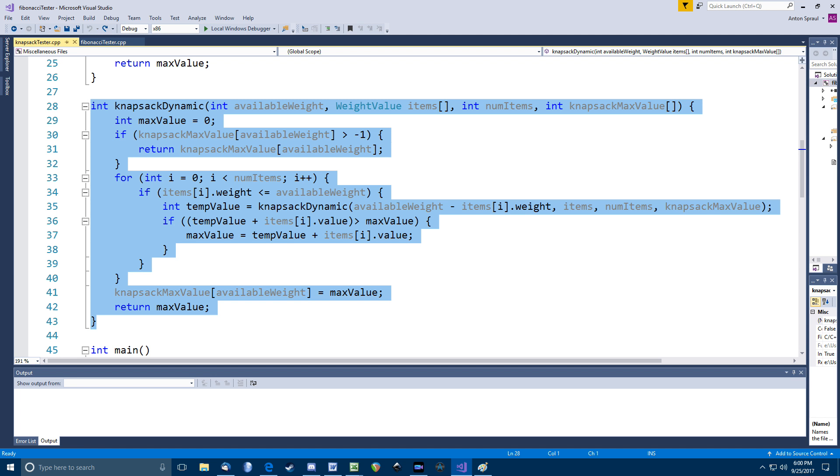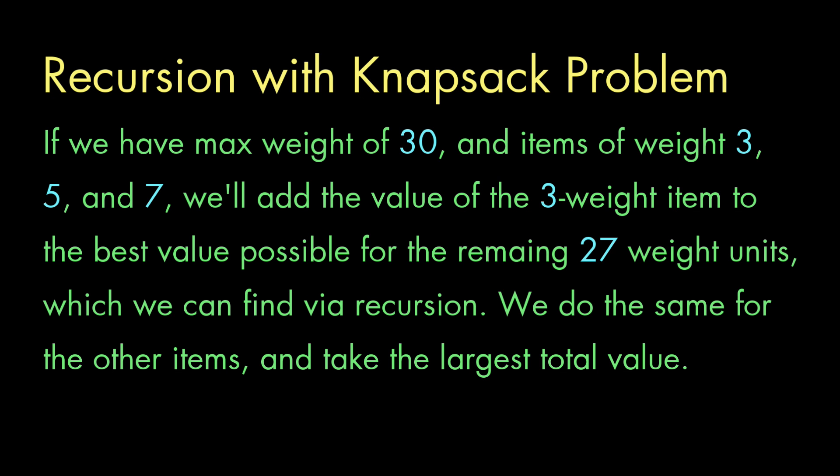Here's the dynamic programming solution to the knapsack problem that I showed in a previous video. If you haven't watched that, and you're not familiar with the dynamic programming concept, you might want to go back and watch that video first. Anyway, as you might recall, the idea behind this solution is that if we have a total possible weight of 30, for example, and we have items of weights 3, 5, and 7, we might start with an item of weight 3, and use recursion to find the best way to make use of the other 27 units of weight. And then we try the item with the 5 weight, and use recursion to make the best use of the other 25 units.